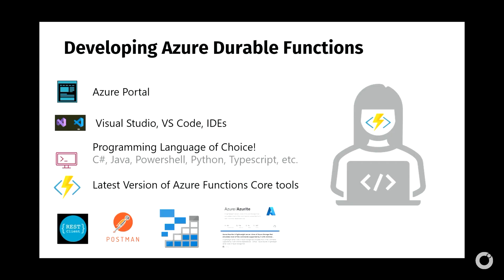For development, there are many options: Azure Portal, locally using Visual Studio or VS Code — any IDE supported for your preferred language such as C#, Java, or PowerShell. You'll need the latest Azure Functions Core Tools, and tools like REST Client or Postman. There's also local logging using Azurite. One key note: if you create Azure Functions in the Azure Portal you cannot edit them in Visual Studio — you must choose one or the other. You can create resources as infrastructure as code as well.